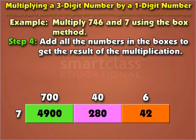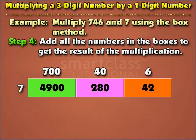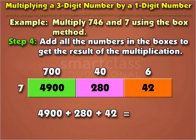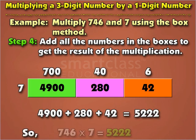Step 4: Add all the numbers in the boxes to get the result of the multiplication. Four thousand nine hundred plus two hundred eighty plus forty-two is equal to five thousand two hundred twenty-two. So, seven hundred forty-six into seven is equal to five thousand two hundred twenty-two.